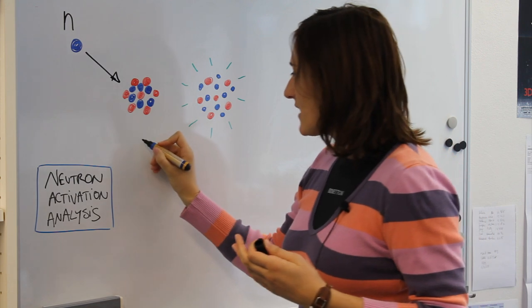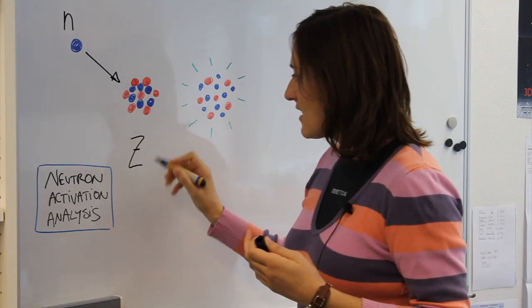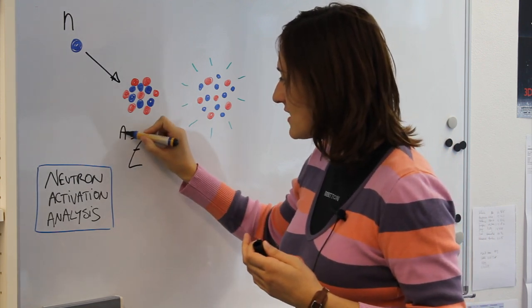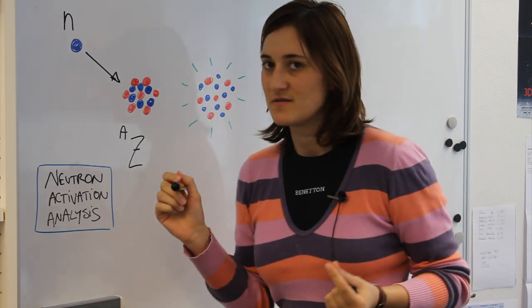A nucleus is defined by the number of protons Z and an atomic number A that is the sum of the protons and the neutrons together.